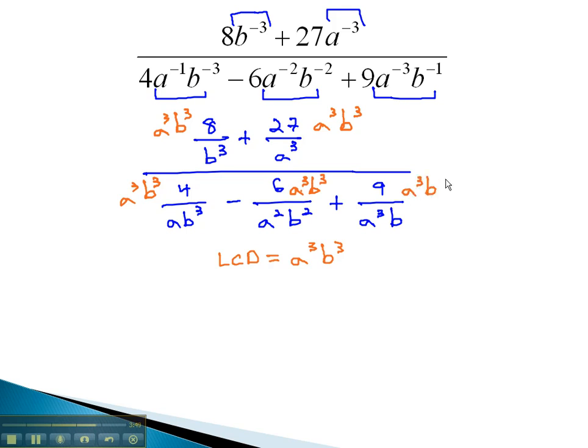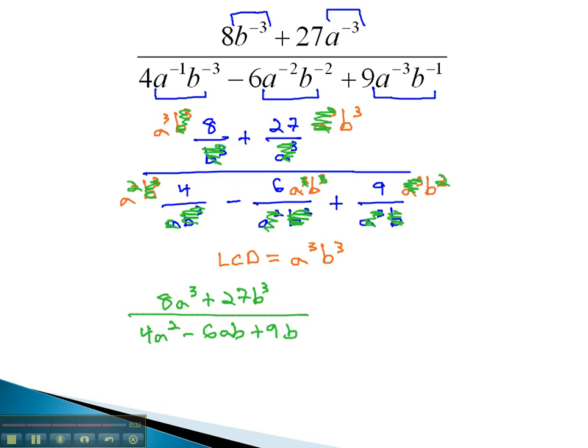Each term gets multiplied by a cubed, b cubed, and we start reducing. The b cubed divide out, the a cubed divide out. In the denominator, b cubed divides out, and 1a divides out, leaving 2 behind. a squared divides out, leaving 1 behind. b squared divides out, leaving 1 behind. The a cubed divide out, and the b divides out, leaving 2 behind. We now have 8a cubed, plus 27b cubed, over 4a squared, minus 6ab, plus 9b squared.